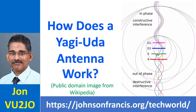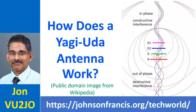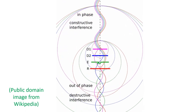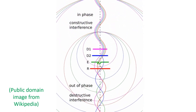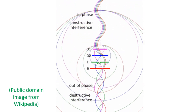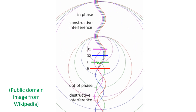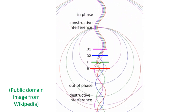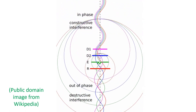Output of the radio is fed only to the driven element. The animation illustrates how a four-element Yagi-Uda antenna works. There are two directors and a reflector in addition to the driven element dipole.